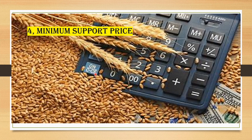The next problem is minimum support price (MSP). The government provides MSP for some crops like paddy, sugarcane, wheat, and maize, and procures them in some seasons and in some areas. However, the government gives support for kharif crops in some areas but does not give support for rabi crops in others. This is also one of the reasons why farmers are not choosing agriculture.